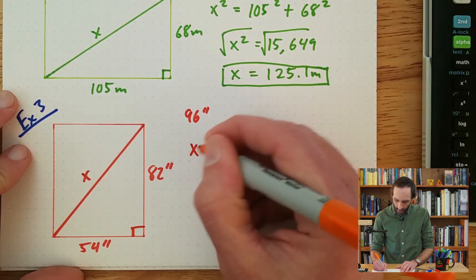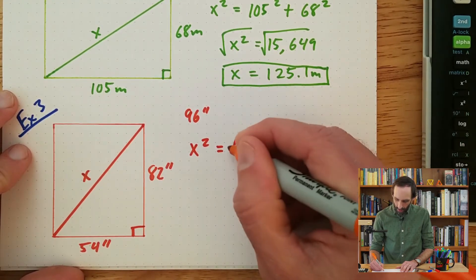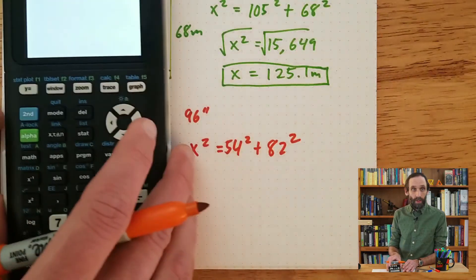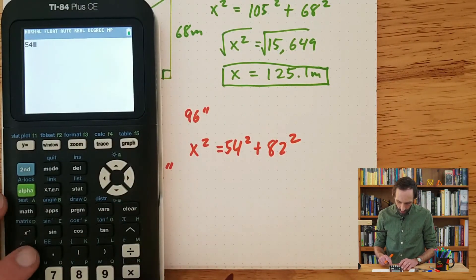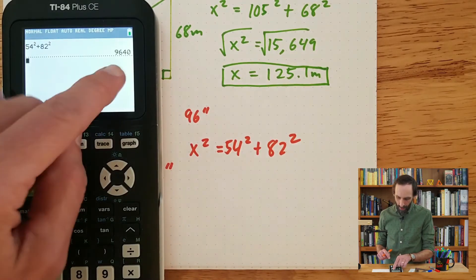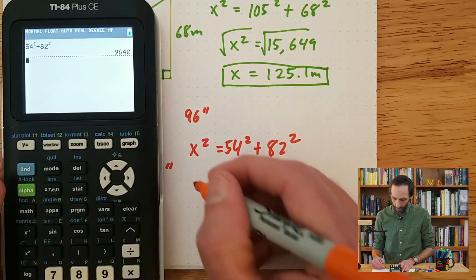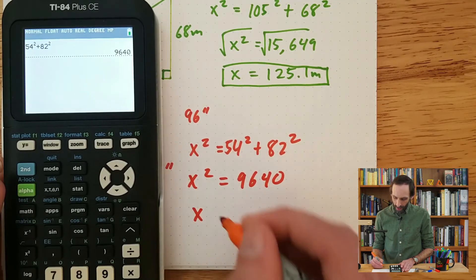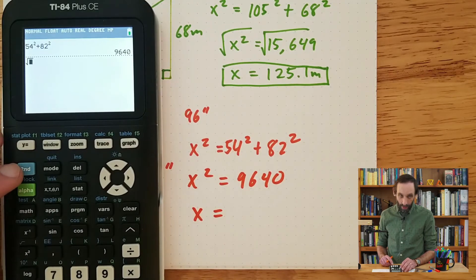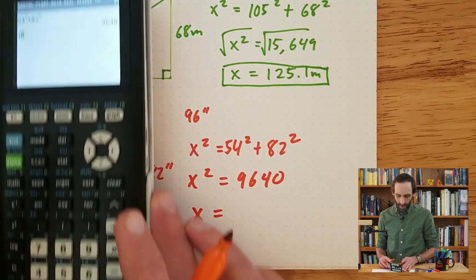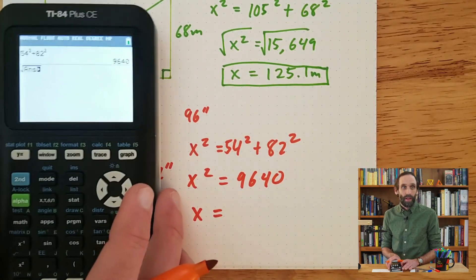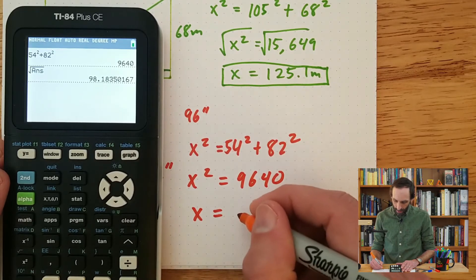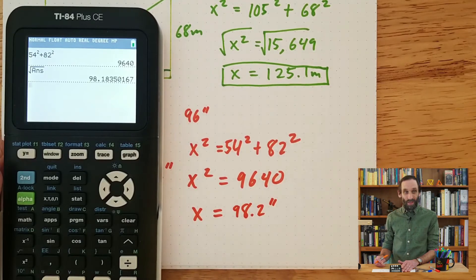So let's use the Pythagorean theorem: x squared is equal to 54 squared plus 82 squared. Plugging that into the calculator: 54 squared plus 82 squared gives me 9,640. So x squared equals 9,640. Now I take the square root of both sides — using the second-answer shortcut on the calculator to recall 9,640 — I hit enter and get a little more than 98 inches. So 98.2 inches, rounded to the nearest tenth.